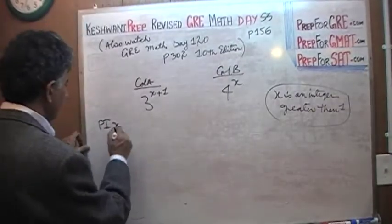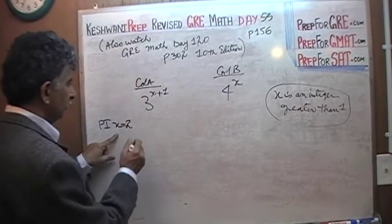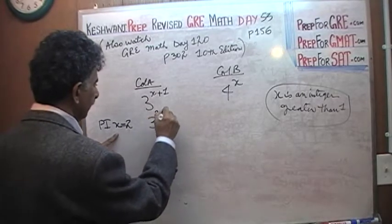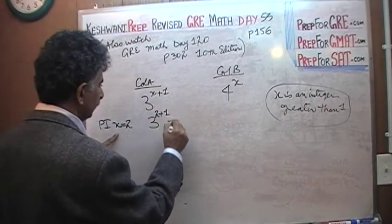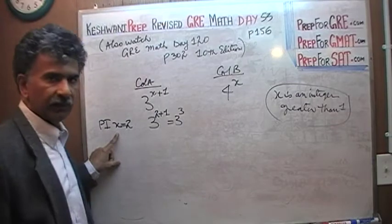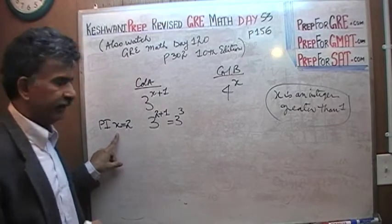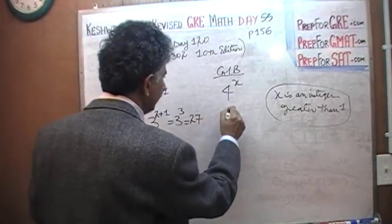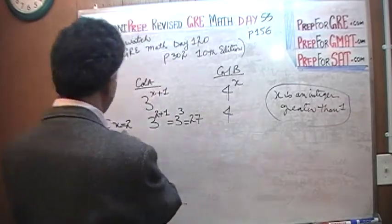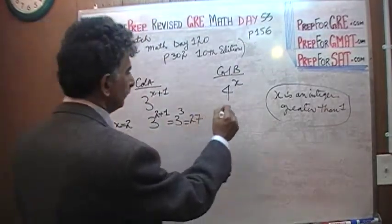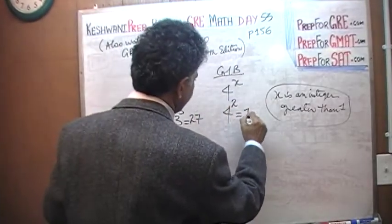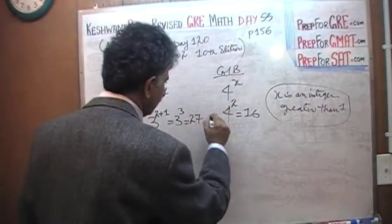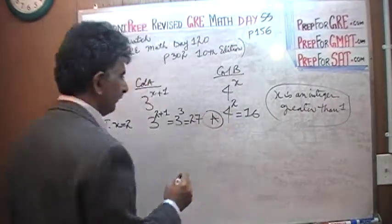Let's plug in X equals two and see what happens. Then we have 3 raised to (2+1), which is 3 raised to 3: three times three is nine, nine times three is 27. And here we have 4 raised to 2X, with X equal to two, so that's 4 raised to 4, which is 16. Based on the work done so far, the answer appears to be A.